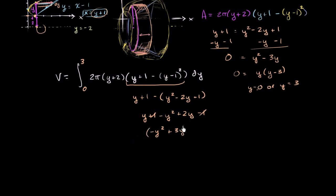And then we're going to multiply that times y plus 2. So when you multiply y plus 2 times this, you have y times negative y squared gets us negative y to the third power. y times 3y is plus 3y squared. 2 times negative y squared is negative 2y squared. And then 2 times 3y is plus 6y.